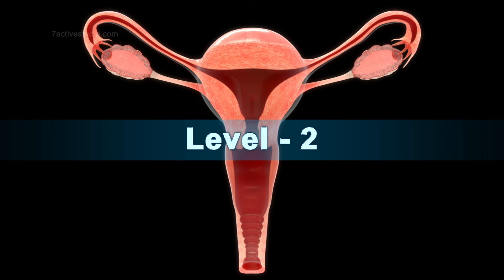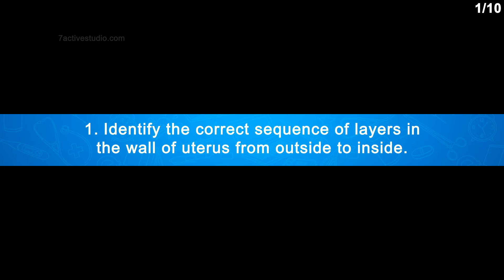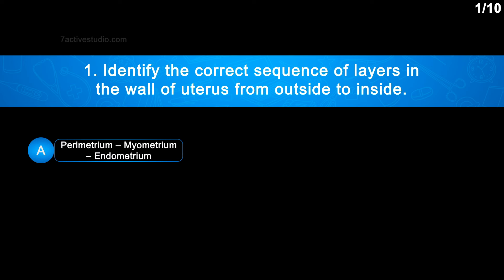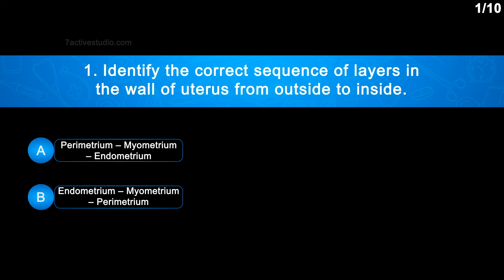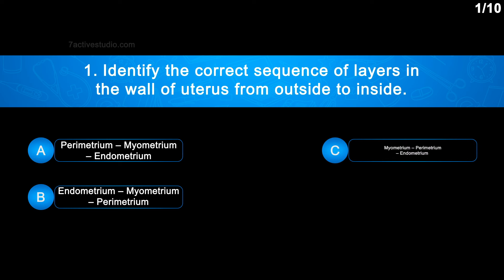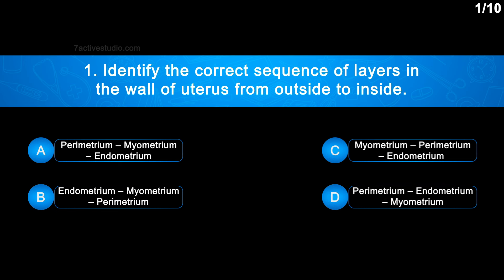Level 2, Question No. 1: Identify the correct sequence of layers in the wall of uterus from outside to inside. Option A: Perimetrium, Myometrium, Endometrium. Option B: Endometrium, Myometrium, Perimetrium. Option C: Myometrium, Perimetrium, Endometrium. Option D: Perimetrium, Endometrium, Myometrium.